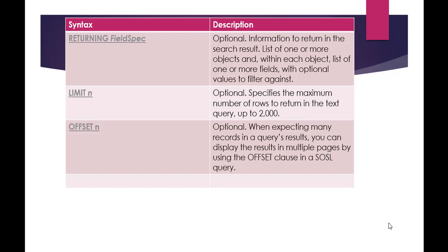For example, if you say limit 5, it will only give you the top 5 records — such as account names starting with the letter N. Limit N specifies the maximum number of rows to return in the text query, up to 2000. Offset N is important when you expect a large number of results and don't want to display all results on a single page. You can use offset to display results in multiple pages — for example, showing 10 records per page.